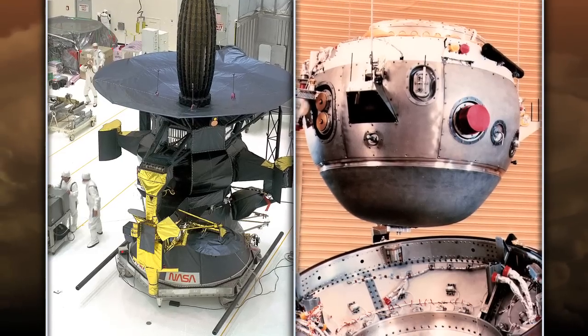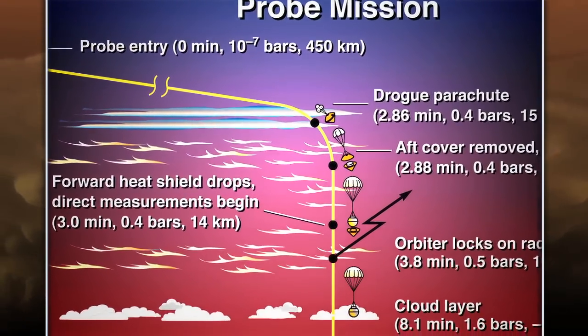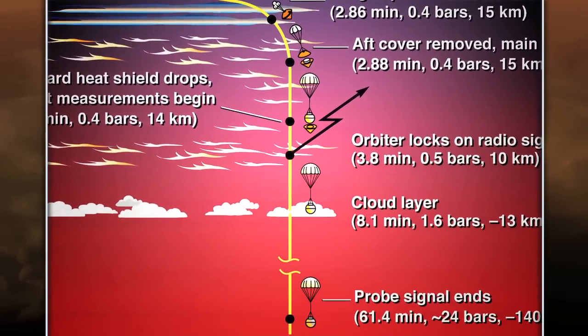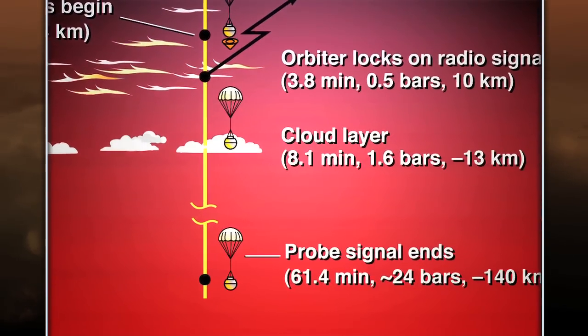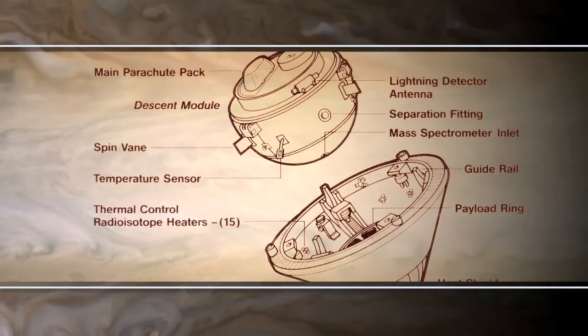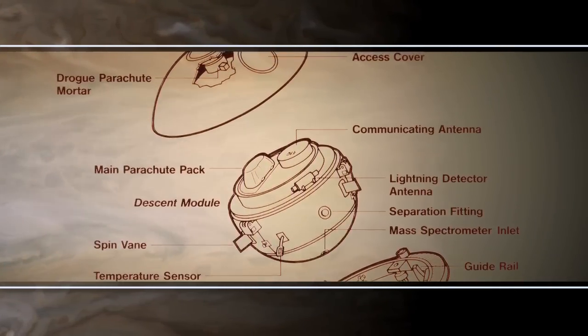Hotspots have been previously studied by the Galileo atmospheric probe. In 1995, the spacecraft released a probe that descended into Jupiter's atmosphere, specifically at a hotspot. And this probe made the first in-situ measurements and the only in-situ measurements of Jupiter that exist today.